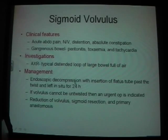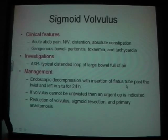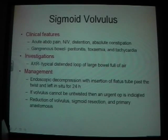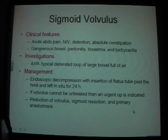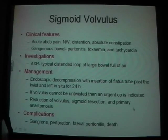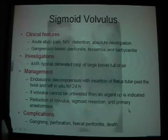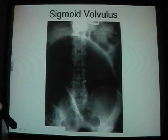X-ray is the main investigation. Management involves endoscopic decompression with insertion of a flatus tube passed the twist, left for 24 hours. If it cannot be untwisted in this way, surgery is considered, where you reduce the volvulus and carry out a sigmoid resection. Complications include gangrene, perforation, faecal peritonitis, and death.